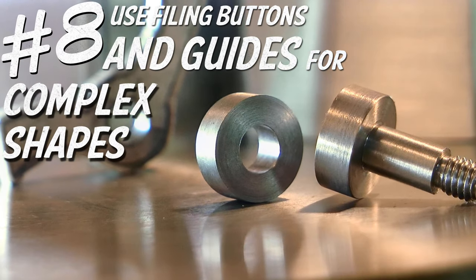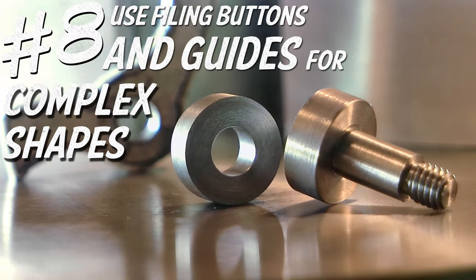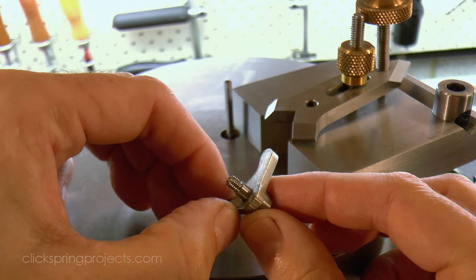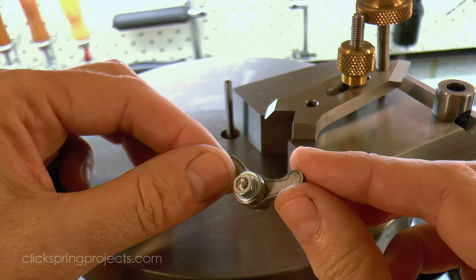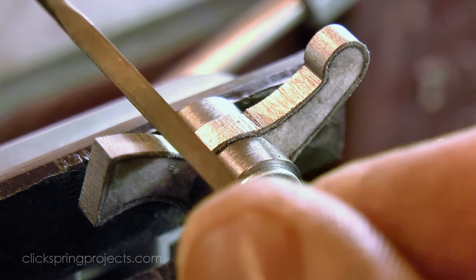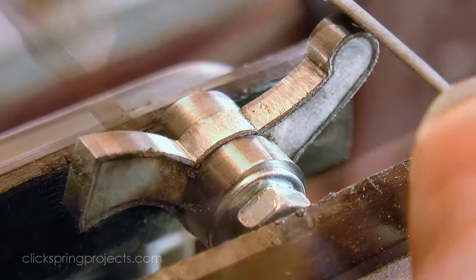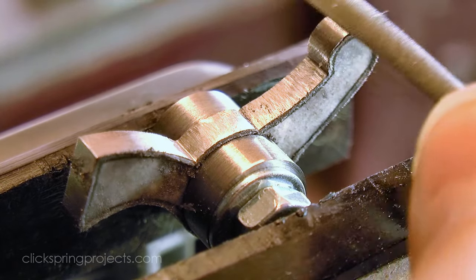And finally just a quick word about filing buttons and other filing guides. It's one thing to file a flat surface, but something else entirely to freehand file circular shapes. So one way to make it a lot easier is to use filing buttons. They don't need to be anything fancy, generally just a simple shouldered bolt design is all that's required.